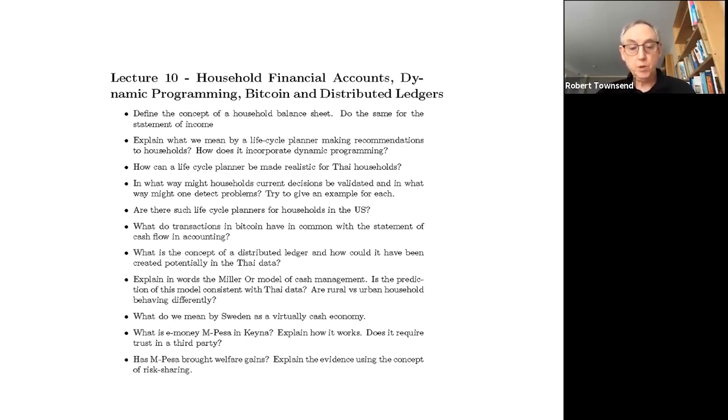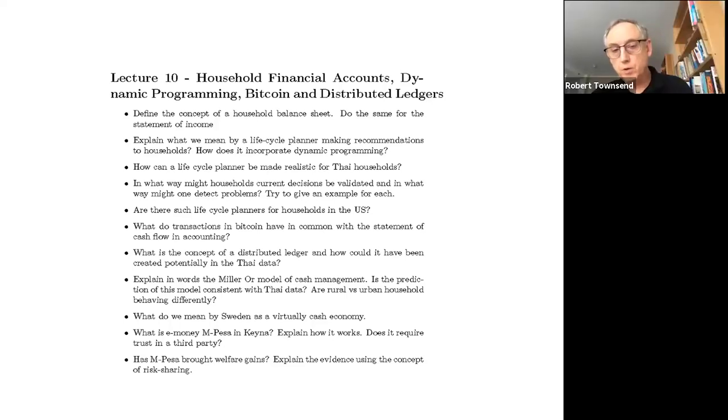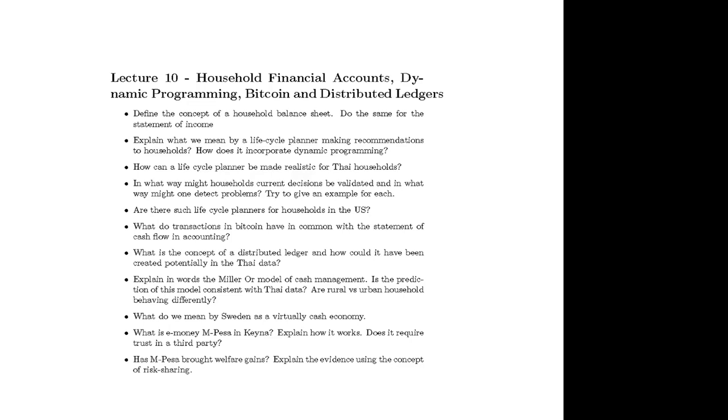The point being that distributed ledgers are an excellent way of reconciling transactions live in real time so that they become more accurate. And then we went to Thailand and talked about currency. Can someone tell me in words a bit about this Miller-Orr model of cash management? So in the Miller-Orr model, like the net expenditures are the sum of like smaller recurrent expenditures and like infrequent larger ones that have a lower probability. And so the goal of the household would be to minimize the costs. And I remember there was like a Bellman equation for that. That's good.